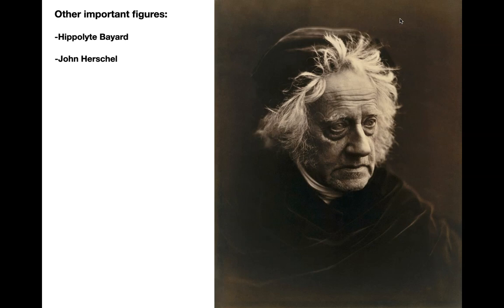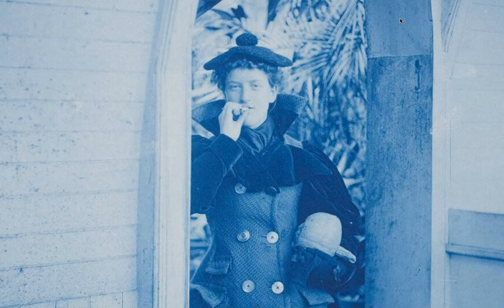A stark contrast to that is John Herschel, who you may recall was the one who discovered that hypo could stop the darkening of the silver after development. He was the one who came up with the part of the process that both Talbot and Daguerre used to stop development and protect images from continuing to darken. This is a huge debt that they owe to him, and it speaks of his generosity that he shared it with them without concern for credit or money.